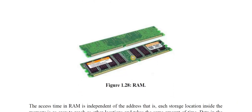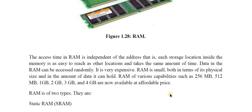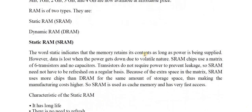This is the figure of a RAM chip as seen in a desktop computer CPU. RAM is small in physical size but expensive. RAM is available in various capacities such as 256 MB, 512 MB, 1 GB, 2 GB, 3 GB, and 4 GB, now available at affordable prices.